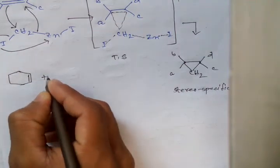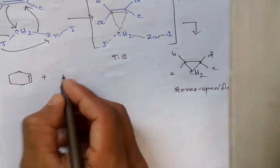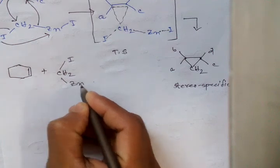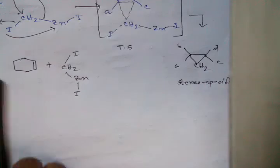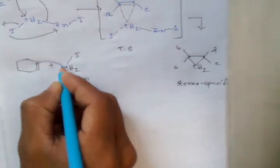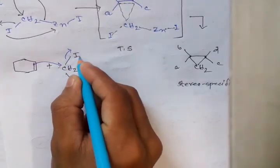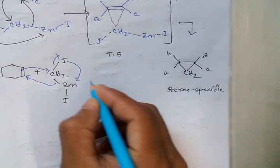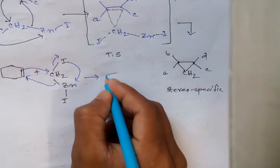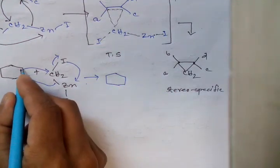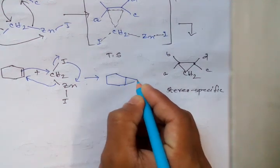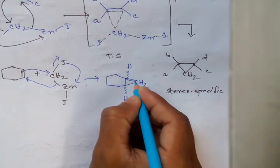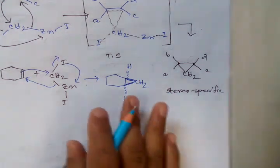Now when this system is treated with the same organozinc carbenoid species, this bond attacks here and this opens up, and this again attacks here. Finally we get a system with addition of the CH₂ group — and the stereochemistry is cis addition of the CH₂ group.